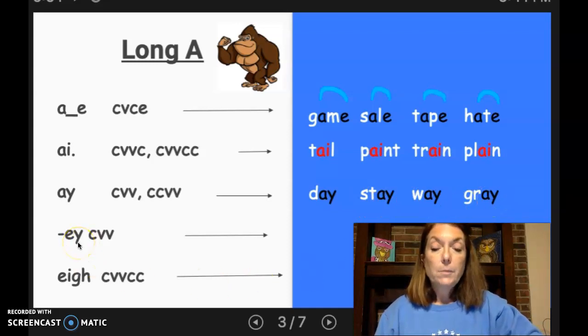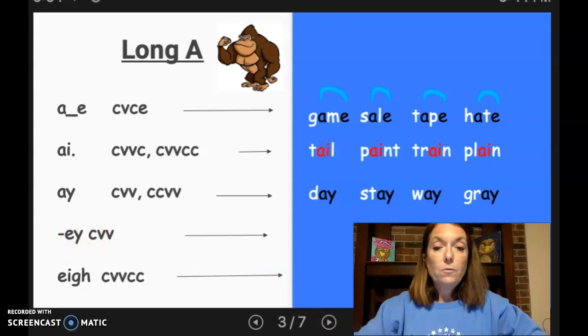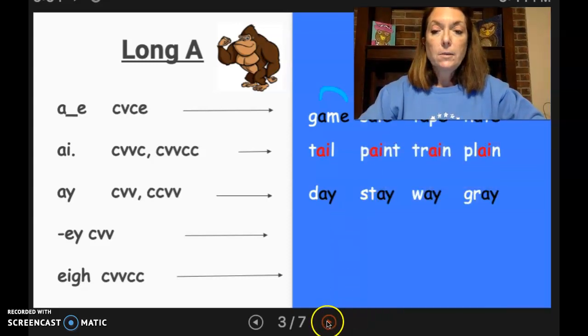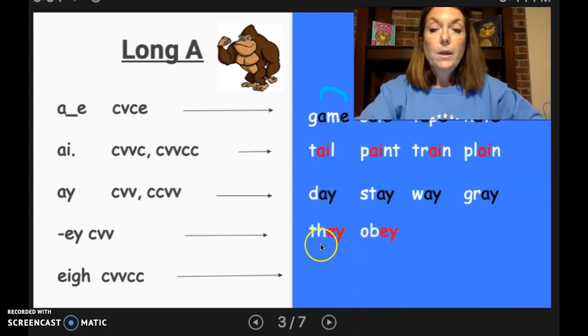Another way to spell that A sound is EY at the end. No A there at all. But EY together may say that sound. And so let's look at some words that have that. I'm going to move this so we can see those. Let's see what they are. We have they and obey.